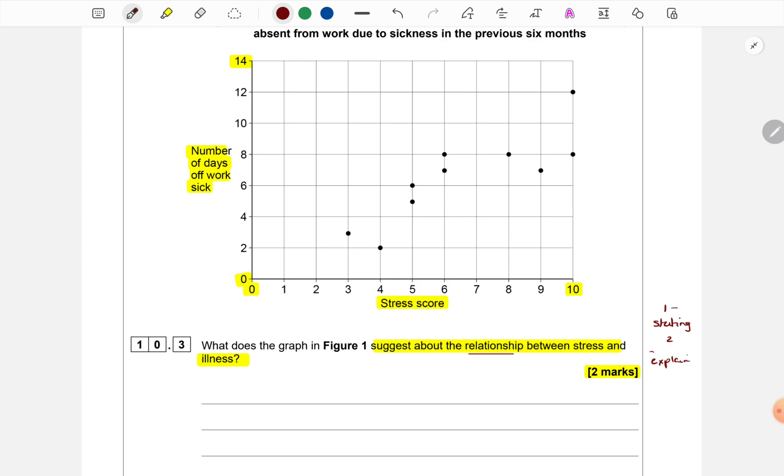One thing we always have to keep in mind in AO2 type of application questions, we must use wording from the scenarios given. Otherwise, there is no point of giving the scenarios. They would have just asked us direct descriptive questions. Okay, never give general answers. Like for this, some students will have a tendency to write. There is a positive relationship between the variables.